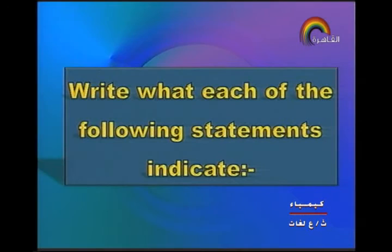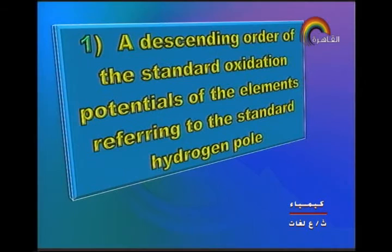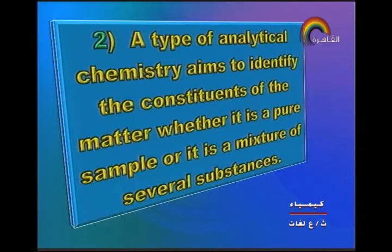Next type of question: write what each statement indicates. A decreasing order of the standard oxidation potential of elements referring to the standard hydrogen electrode — this is the electrode potential series of elements. Next point: a type of analytical chemistry that aims to identify the constituents of matter, whether pure sample or mixture of substances — the answer is qualitative analysis.